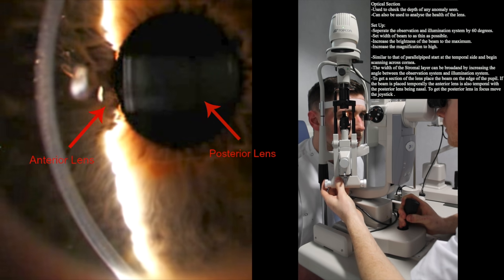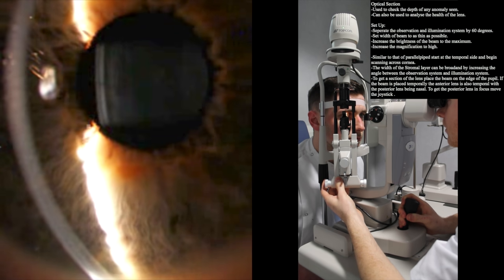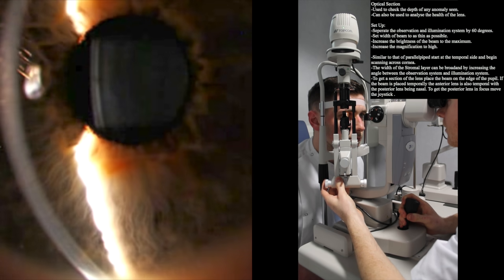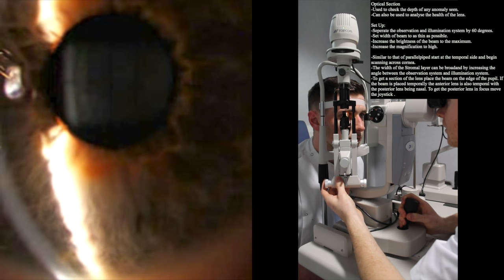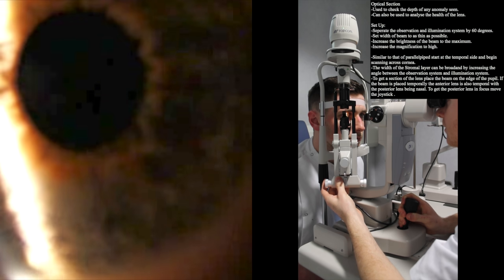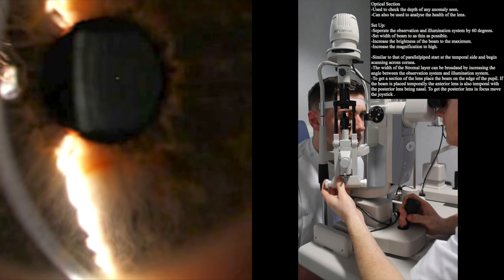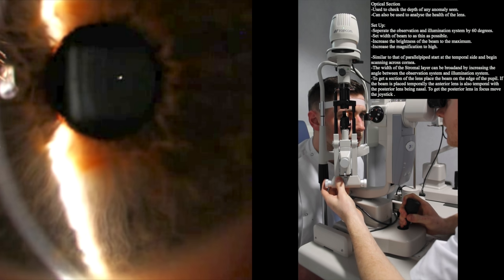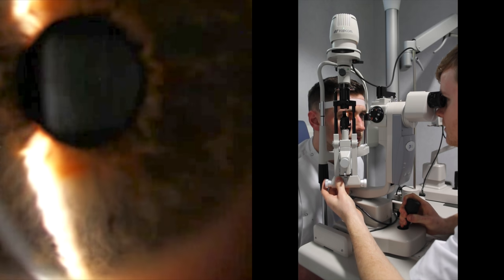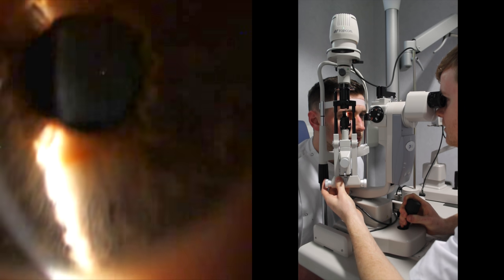To achieve a clear image of the posterior lens, move your joystick slightly until it is in focus. This method is particularly helpful in assessing and identifying cataracts.